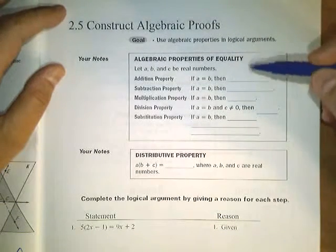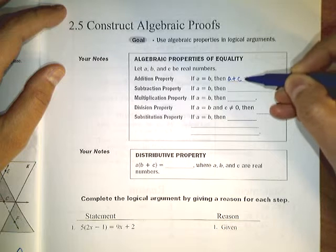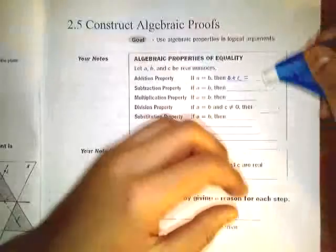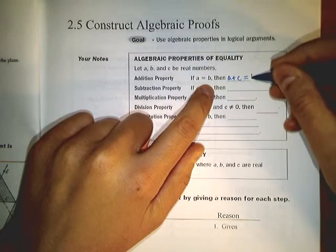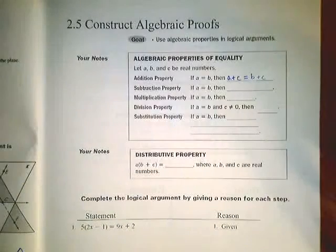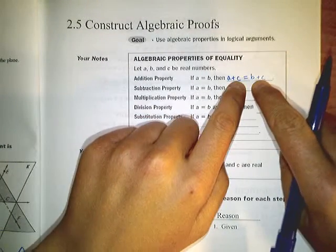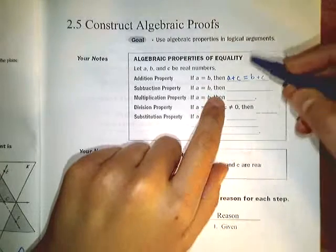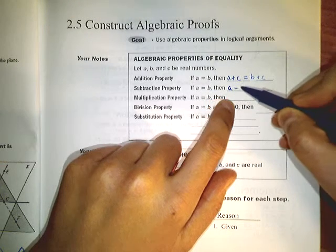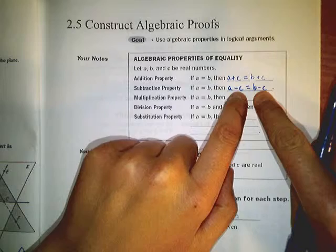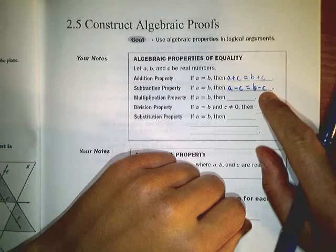The addition property says that if you add the same thing on both sides, you still have a true statement. If you took the left side of the equation and added C, and you took the right side and added the same amount C, you still have an equation that's true. The subtraction property basically says if you subtract the same thing on both sides, it remains a statement of equality.